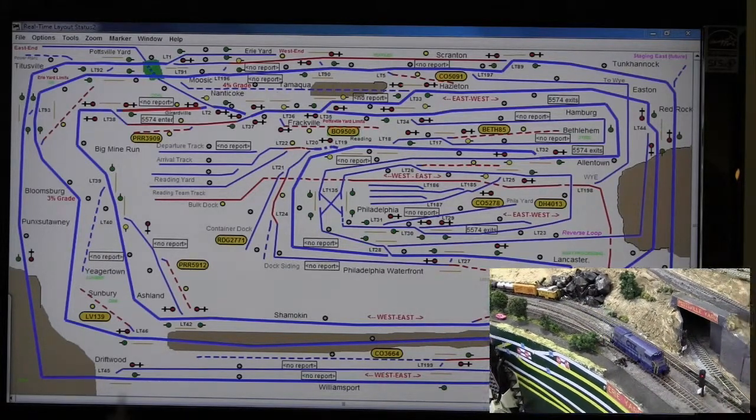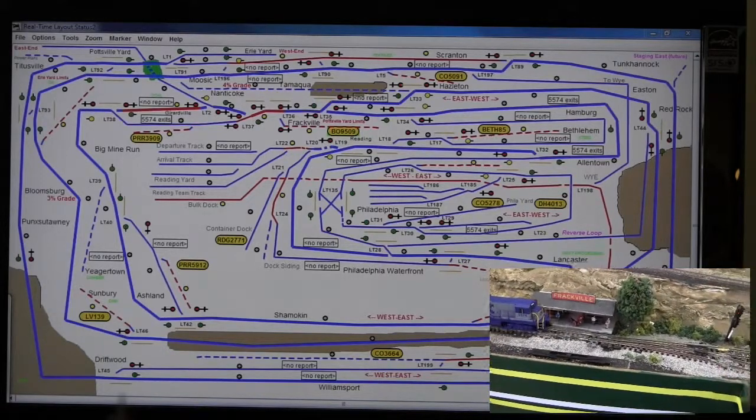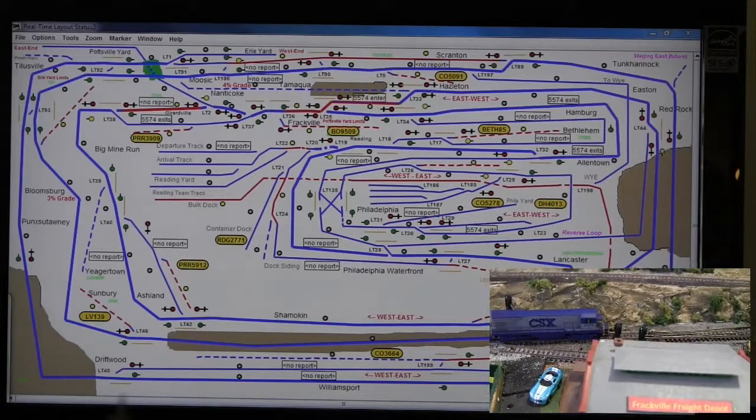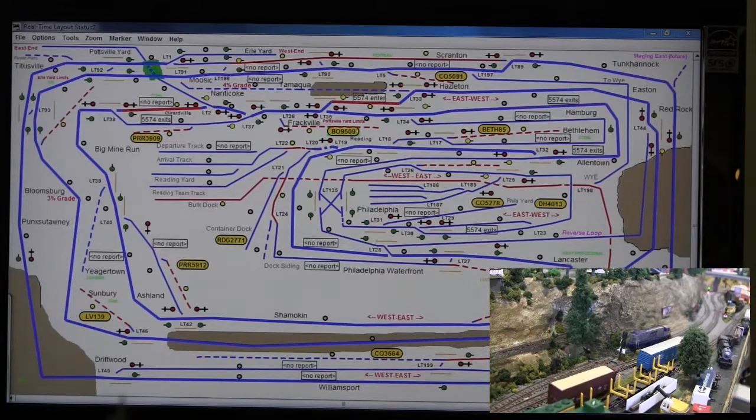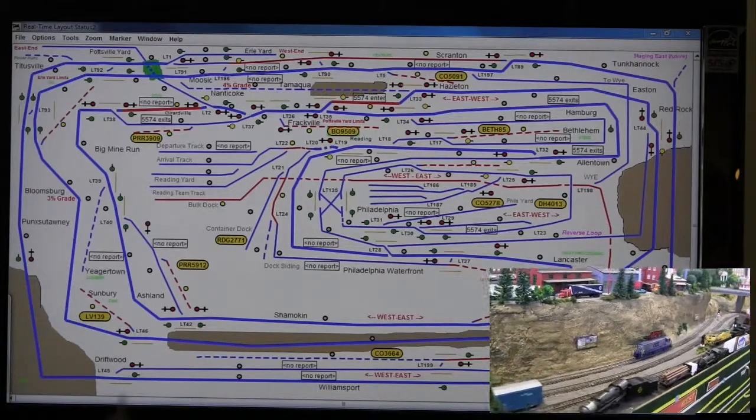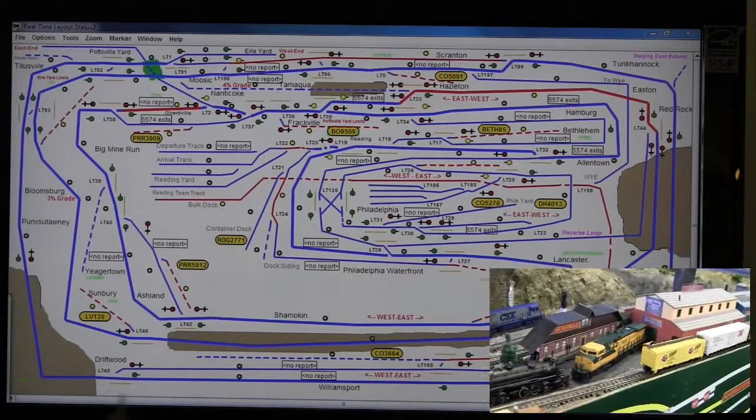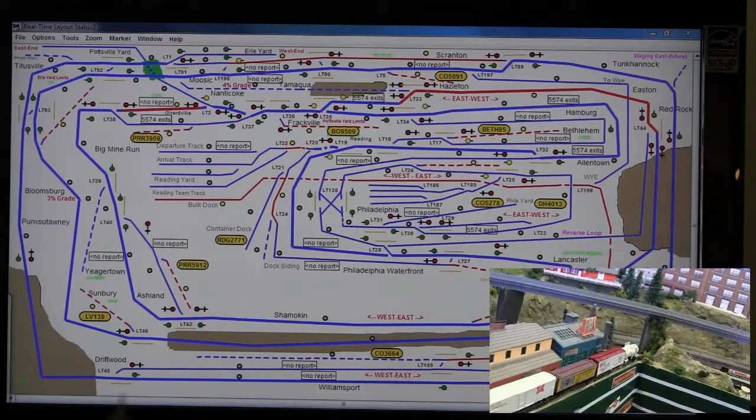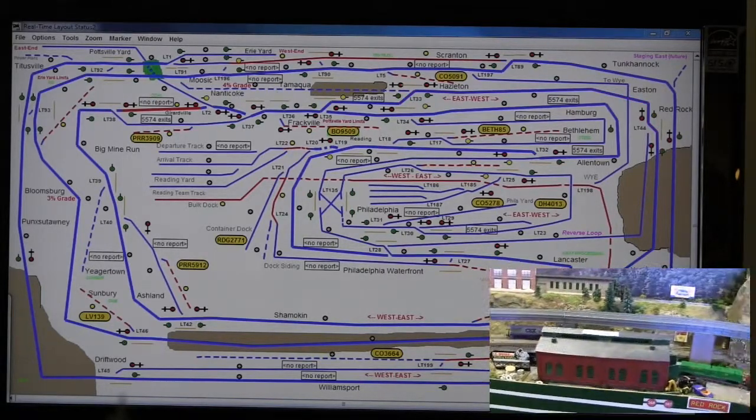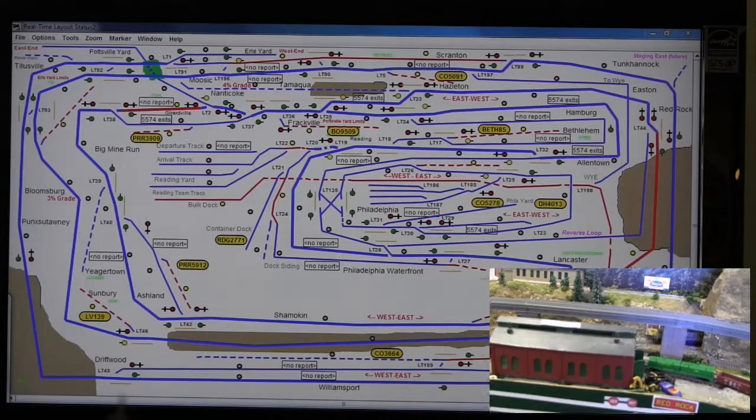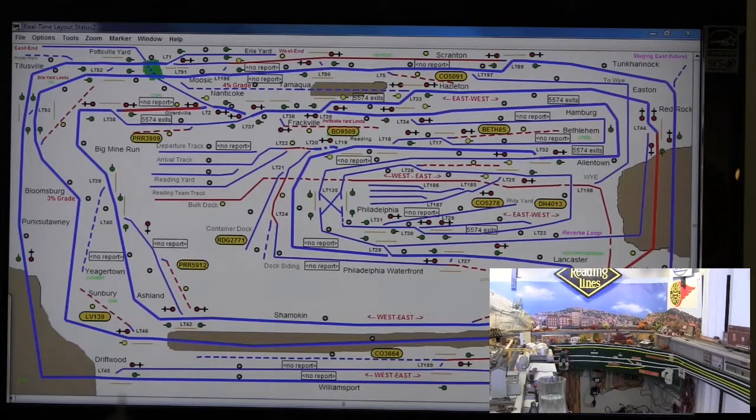Now heading up the back way to Frackville. And we're now in Frackville. And we're heading toward the Route 81 equivalent of Hazleton, going over by Easton, to Hershey to pick up some more chocolate.